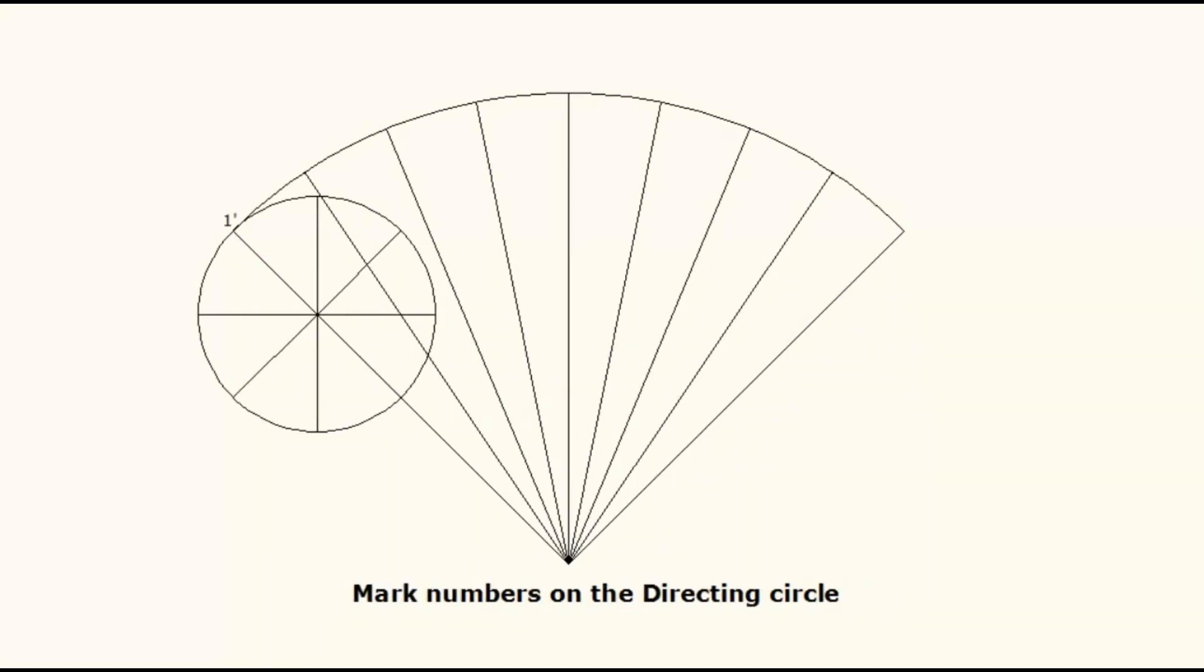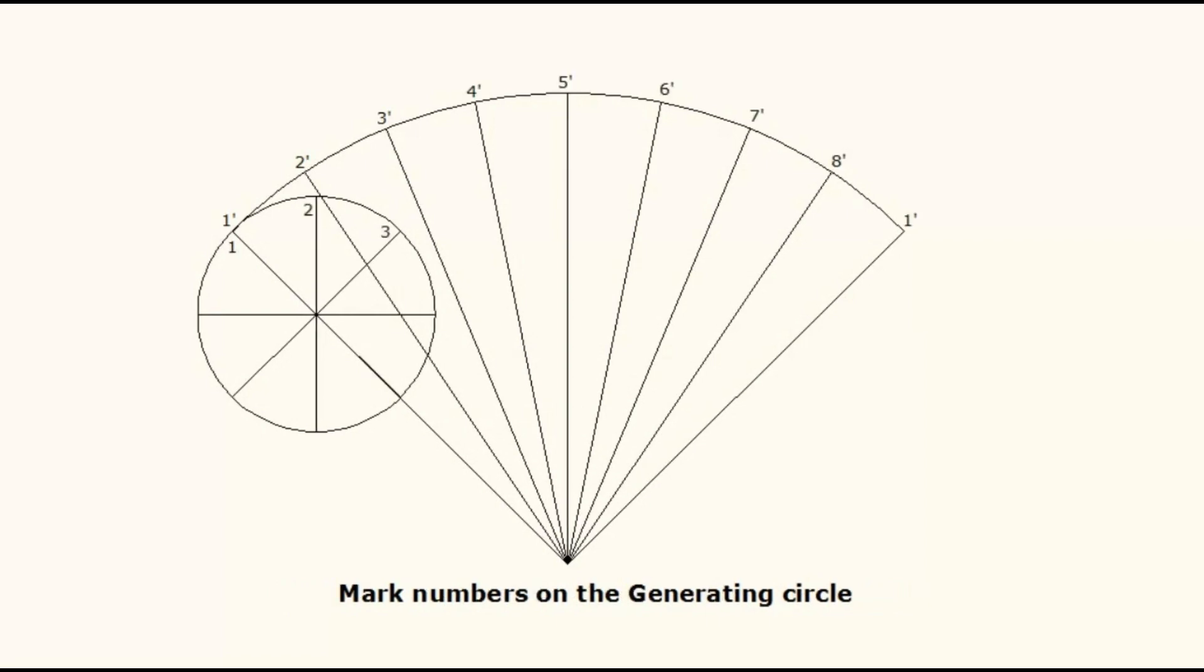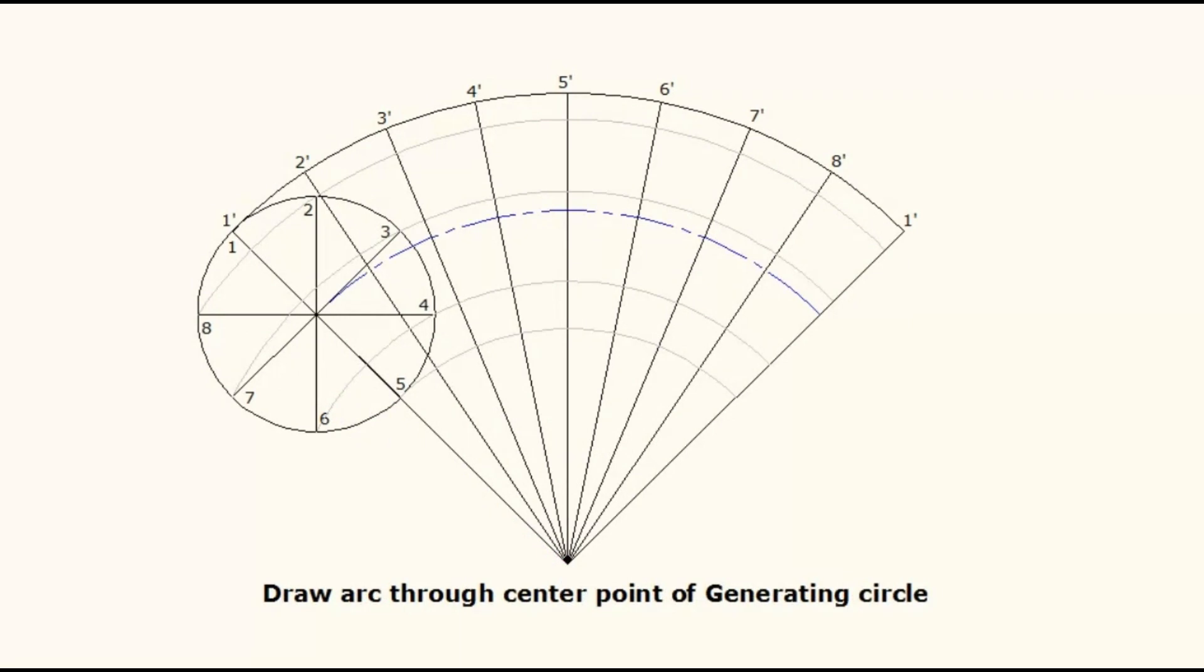Mark numbers on the directing circle. Mark numbers on the generating circle. Draw arcs through all the divisional points of the generating circle. Draw a center arc through the center point of generating circle also. Mark the center locations of the generating circle.